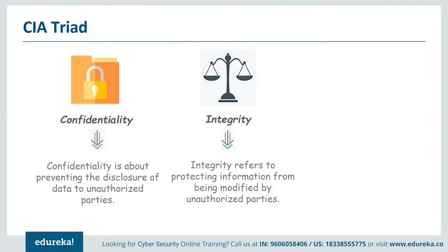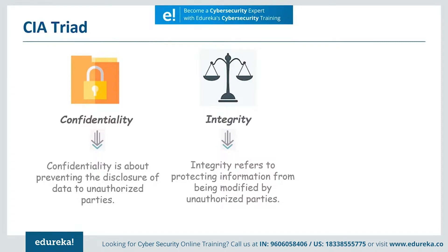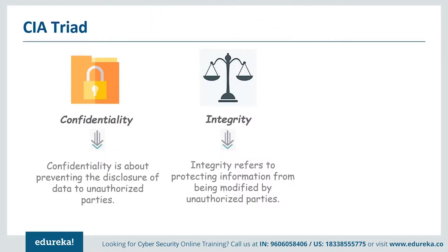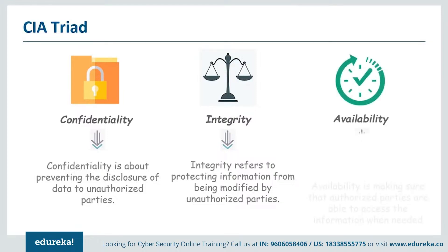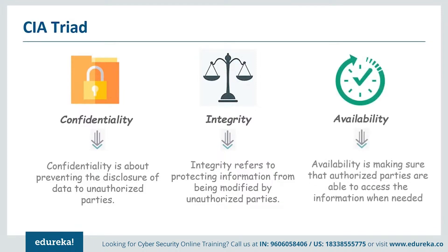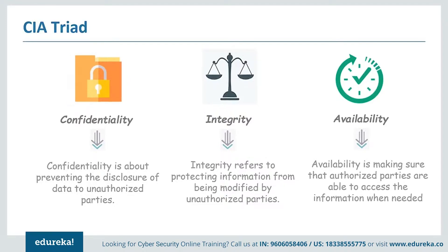Integrity is when the information stored in a system is accurate and highly reliable. It is the protection of information from intentional or accidental unauthorized modification. For example, if a hacker were to break into a banking website and change a balance from $1 to $1 million, the integrity of that site is lost. The final component, availability, is the assurance that systems and data are accessible by authorized users whenever they need it. If we cannot access data when we need it, we are definitely not secure.